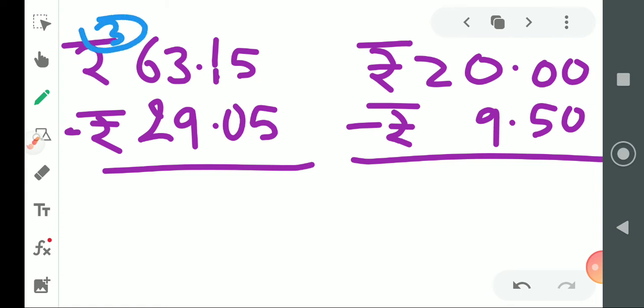Come to example number 3. ₹63.15 minus ₹29.05. 5 minus 5 is 0. 1 minus 0 is 1. Here point. 3 minus 9 is not possible, we have to carry. Then 13 minus 9 is 4. 6 becomes 5. 5 minus 2 is 3. So the answer is ₹34.10.